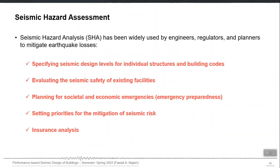The seismic hazard assessment process is not only for structural engineers — it has several other applications. One application is that we use these numbers for the design of new buildings and evaluation of existing buildings. Other applications include planning for societal and economic emergencies, setting priorities for mitigation of seismic risk by disaster management authorities, and insurance analysis — this hazard map is the basic input in earthquake insurance analysis. Our scope is the structural one, but it has many other applications. If you want to do anything about earthquake hazard, the hazard map should be your starting point. This information is the starting point of every policy.